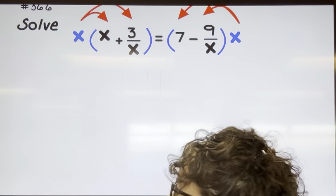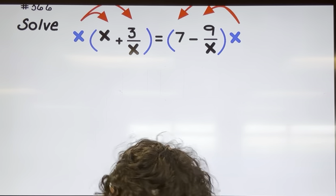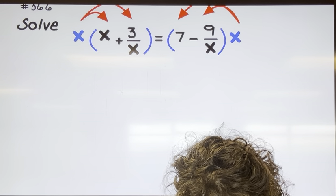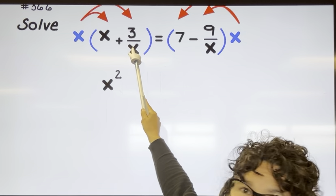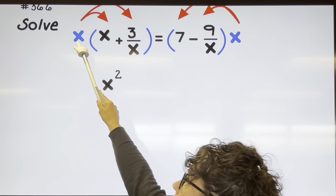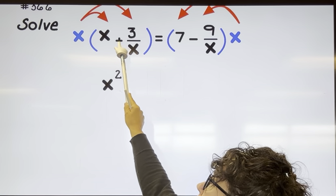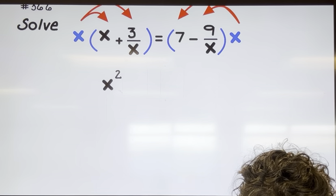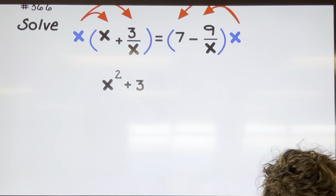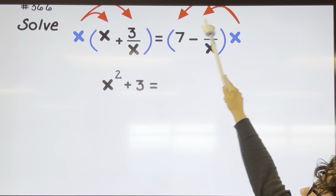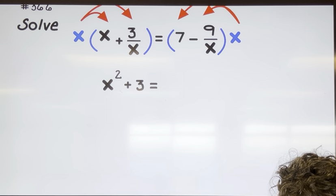If I multiply X times X, I'm going to get X squared. Then X multiplied by three over X — this X is going to cancel that X — so I'm left with plus three. Bring down my equal sign. Now let's multiply X times seven, and that gives me seven X.